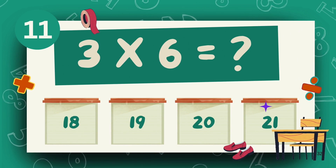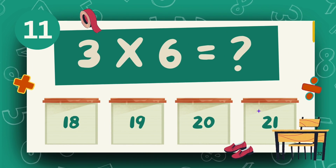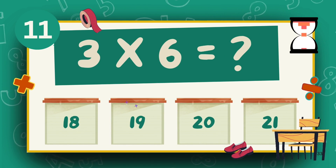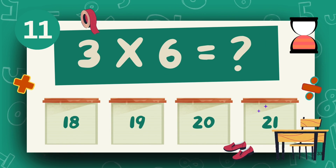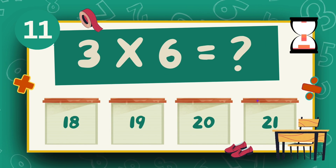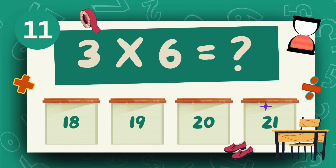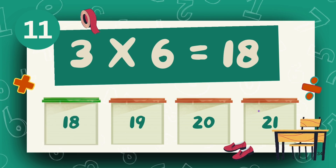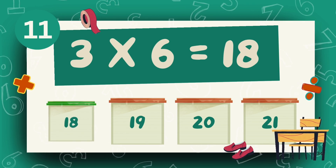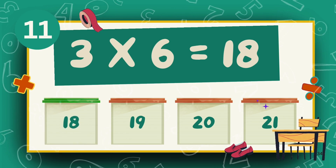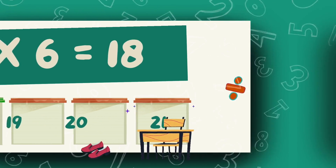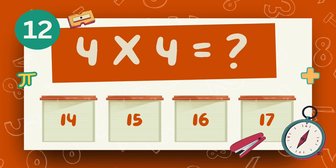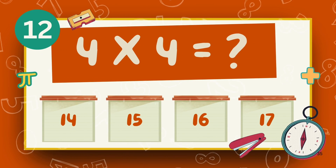What is 3 multiply 6? The answer is 18. What is 2 multiply 4?